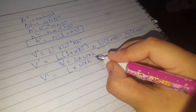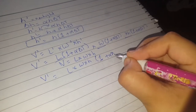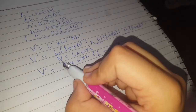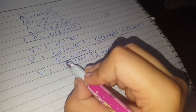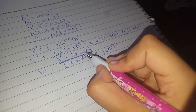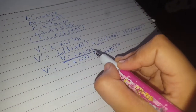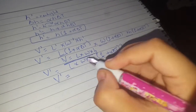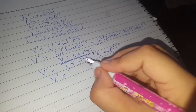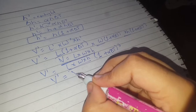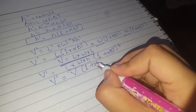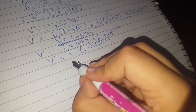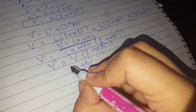Since the original volume V = l × w × h, and all three brackets are the same, we can write: V₀ = V(1 + αδt)³.